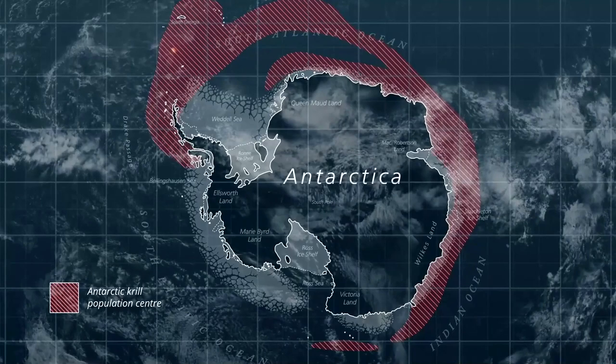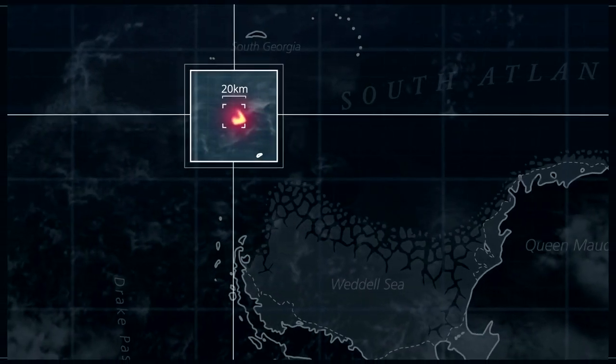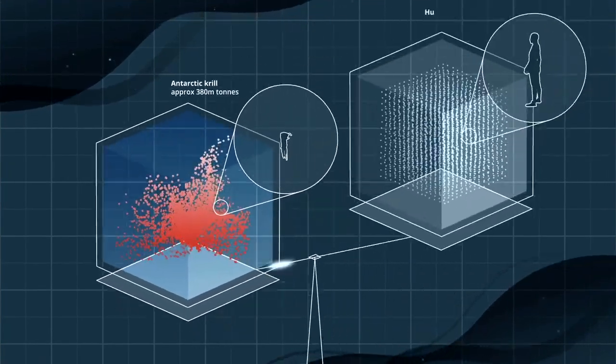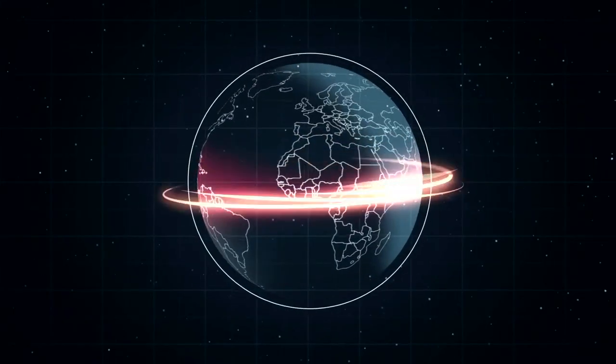They travel in huge swarms that can be seen from space. Their combined weight is similar to that of all the people on the planet. They could wrap themselves around the Earth a million times.